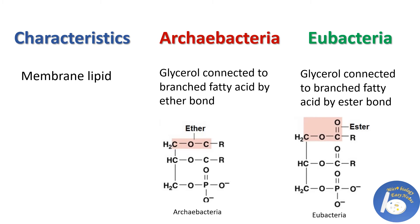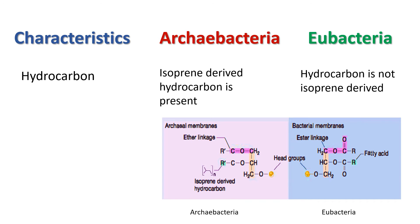Membrane lipid: in Archaebacteria, glycerol is connected to branched fatty acids by an ether bond, but in Eubacteria, glycerol is connected to branched fatty acids by an ester bond. Hydrocarbons: in Archaebacteria, isoprene-derived hydrocarbons are present, while in Eubacteria, hydrocarbons are not isoprene-derived.